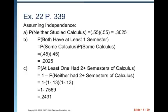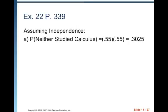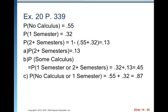For any individual, the probability that they did not have two or more semesters of calculus is one minus 0.13, 0.87. Also, you could use the calculation method that we did in part C where you do 0.55 plus 0.32 to get 0.87.